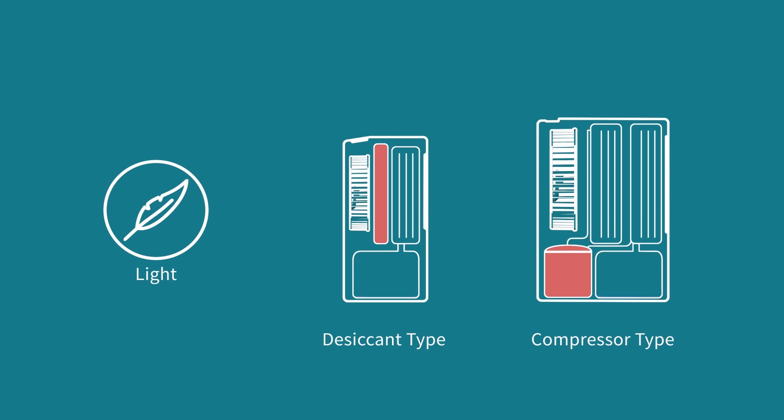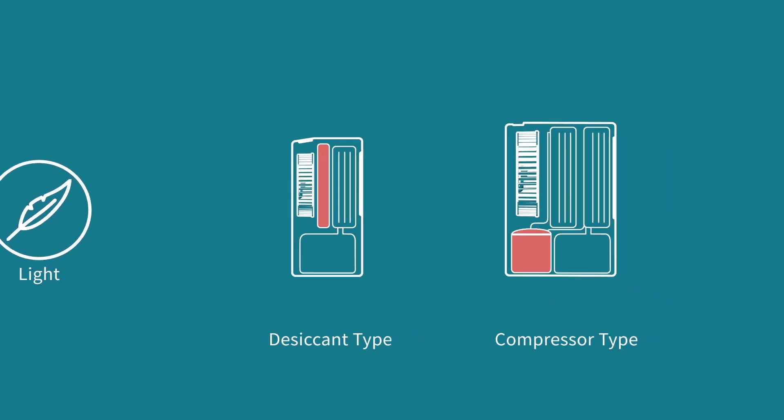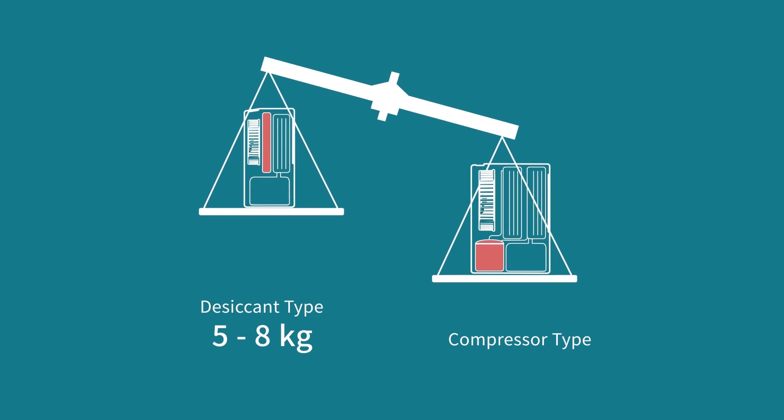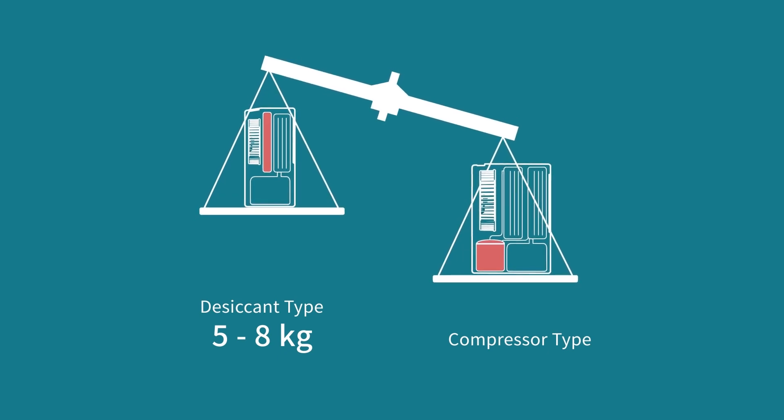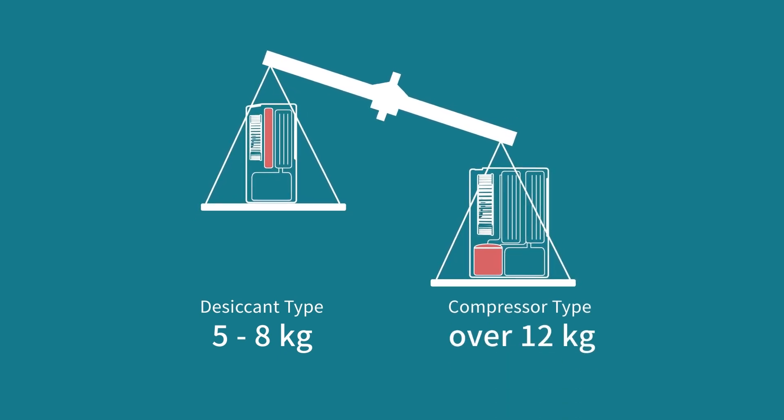Desiccant type is slim and light. It usually weighs only 5 to 8 kilograms and can be carried by seniors and female users easily. Compressor type is bulky and heavy, generally weighing over 12 kilograms.